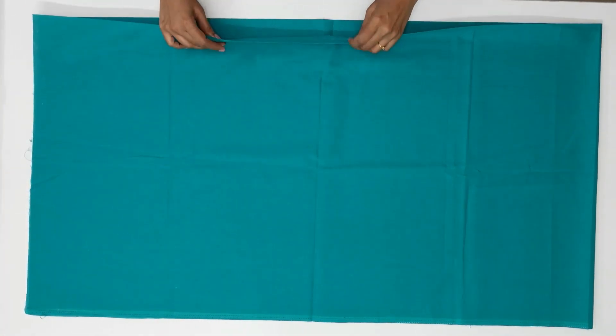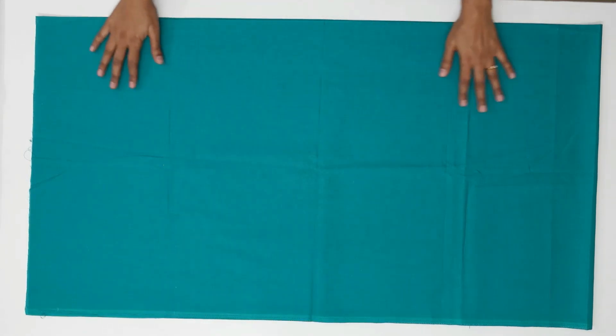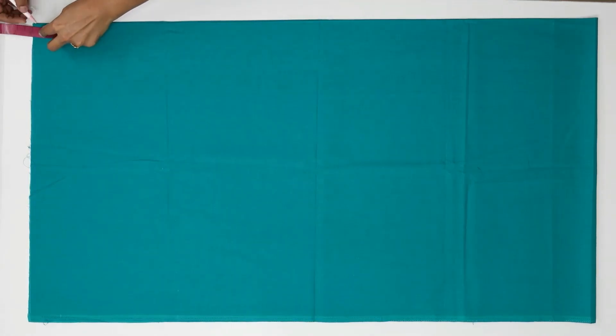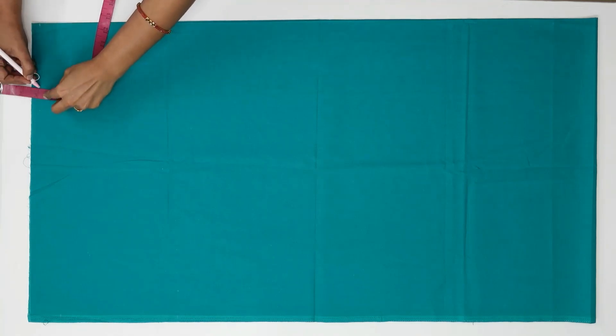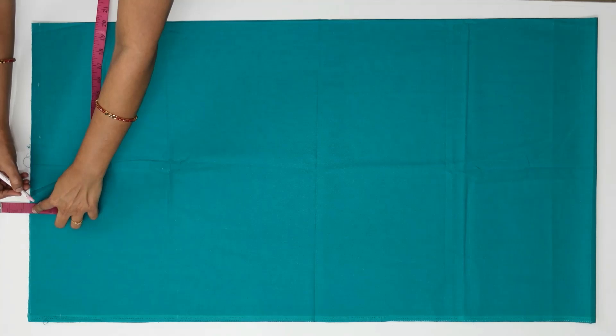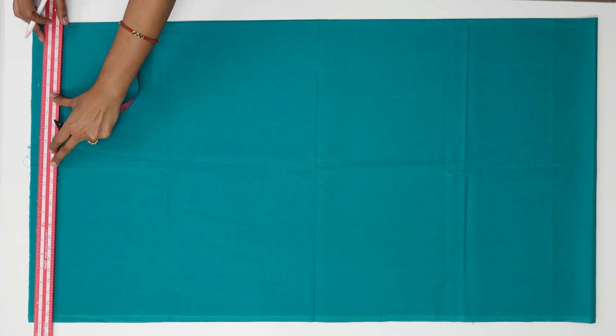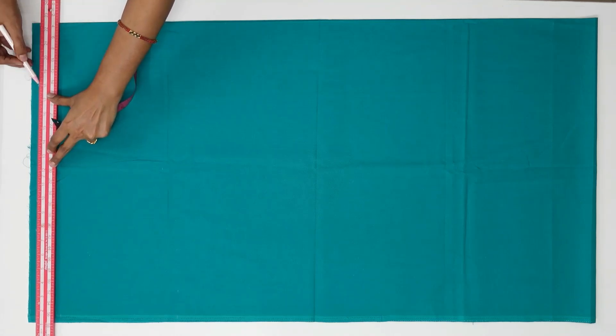So this is the folded part and this is the open side. Mark half an inch from the above for the seam allowance. Mark a line here.